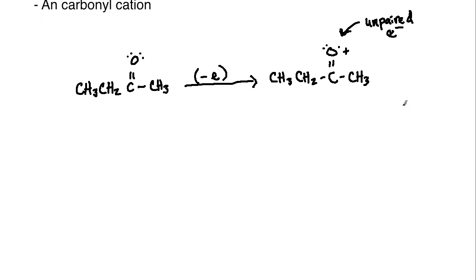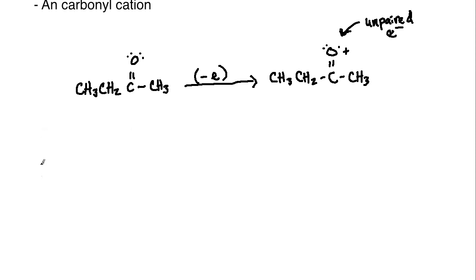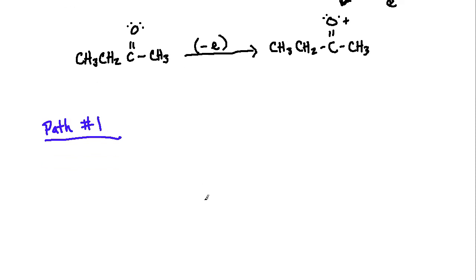Once that radical is formed, let's take a look at pathway number one. This is the fragmentation pattern for path number one if we're interested in an alpha cleavage, and we'll start with cleaving this left-hand side portion. So we've got CH3-CH2. We're going to explicitly draw this bond here attached to the carbon and the carbonyl. And then remember we've got this radical with the plus charge and the CH3. So that's what we're starting with.